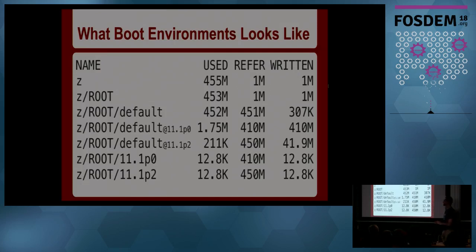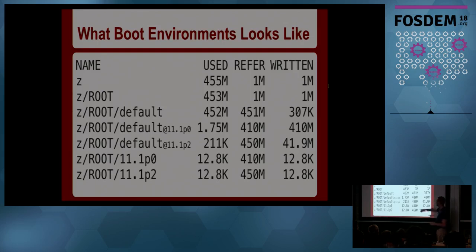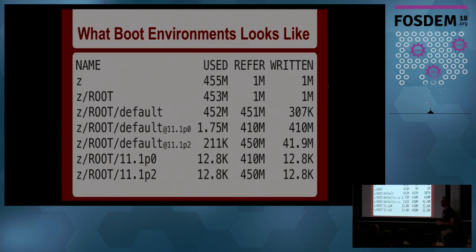Looking at the output of 'zfs list', which lists all the file systems on my laptop: there's a hierarchy called root, and under it a number of file systems. There's one called default. Two are snapshots of default — after the install and after installing some security patches. Those two snapshots have been cloned to make actual file systems instead of just snapshots. The difference between what I'm running now and 11.0p0 is a whole 1.75 megabytes — so it doesn't cost much to keep that around, consuming less than 2 megabytes of disk space. From the boot menu, I can select either of these versions and go back to them.